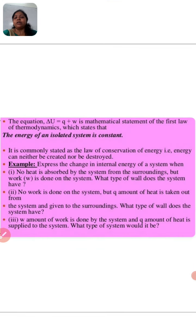Now, the energy of an isolated system is constant. For any isolated system, its energy value is constant. It is commonly stated as the law of conservation of energy. Energy can neither be created nor destroyed, and we know very well the conservation of energy law - we already studied this in class 9. Energy of any system can neither be produced nor destroyed, it only changes from one form to another.